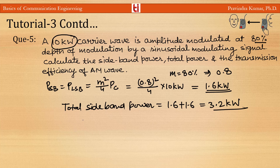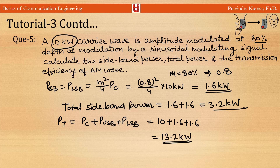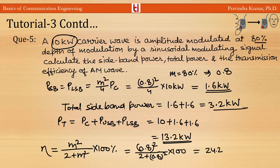Total transmitted power Pt = Pc + P_USB + P_LSB = 10 + 1.6 + 1.6 = 13.2 kW. Transmission efficiency η = m²/(2 + m²), which gives 0.64/2.64 = 0.2424, or 24.24 percent.